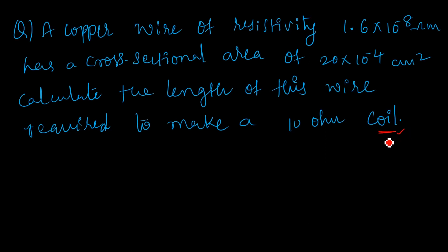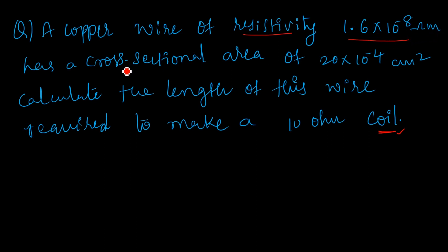Hi everyone, welcome to my channel HDB Academy. In this video we are going to discuss a problem: a copper wire of resistivity 1.6×10⁻⁸ ohm·meter has a cross-sectional area of 20×10⁻⁴ centimeter square. Calculate the length of wire required to make a 10 ohm coil.